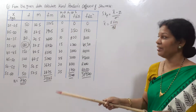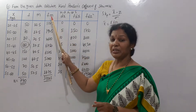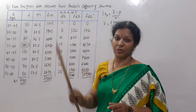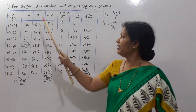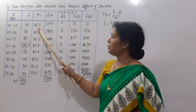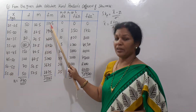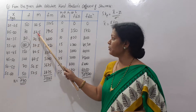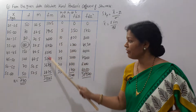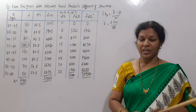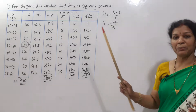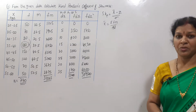Now we create the fm column by multiplying frequency by mid value. 15 × 22.5 = 337.5 and 7 × 27.5 = 192.5. This gives us the fm values needed for the x̄ calculation.